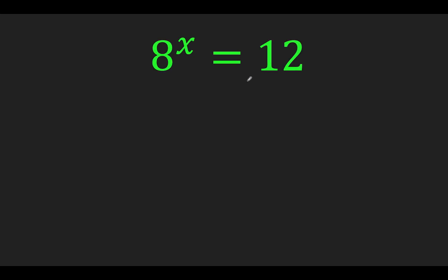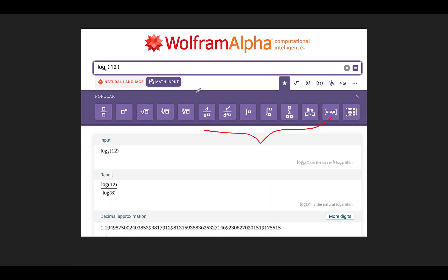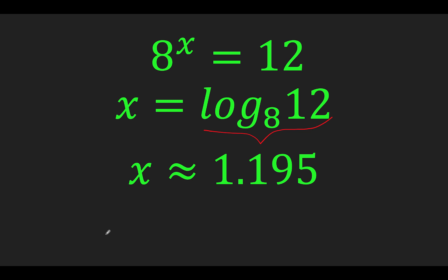Let's say we have 8 raised to x equals 12. We know that in order to solve for this, since we have an exponential 8 raised to x, we get the inverse of raising the exponent, which is getting the logarithm. So x is equal to the logarithm of 12 to the base 8. This right side is just a constant — the log function, when you input 12 to a logarithm base 8, returns a number. Using Wolfram Alpha, log of 12 to the base 8 gives approximately 1.195.